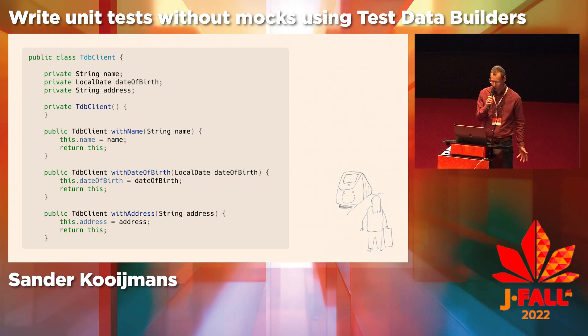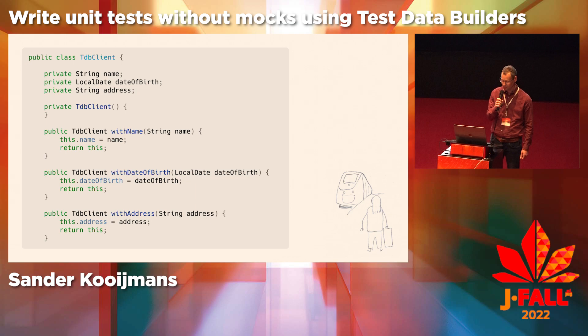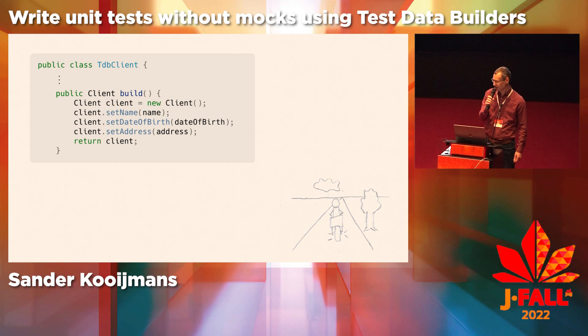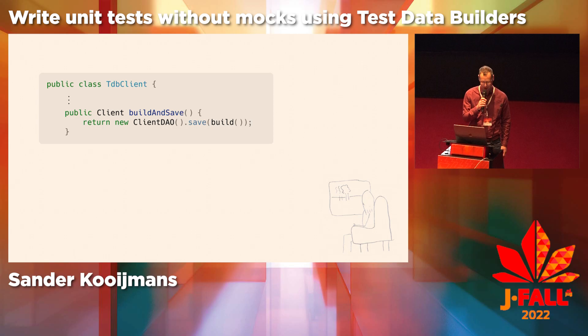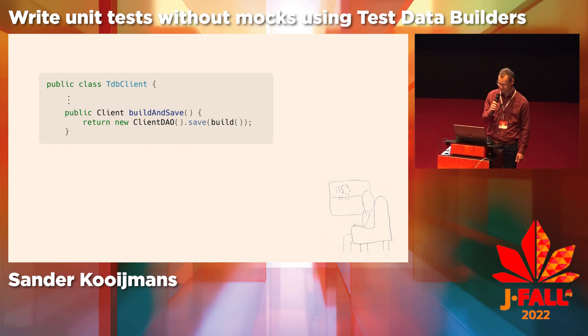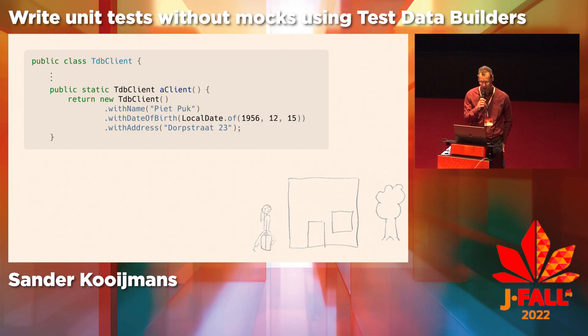What does a test data builder look like? It looks like a builder class, and like a builder class it has a build method that builds the object in memory. Now come the differences: I add a method build-and-save, which builds the object in memory and saves it in the database. The client is now production code — so no mocks. The big difference from a normal builder class is that a test data builder starts with all fields filled with realistic data.